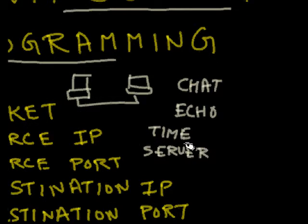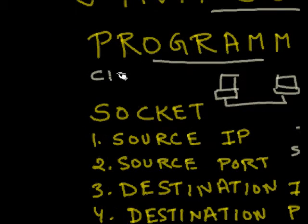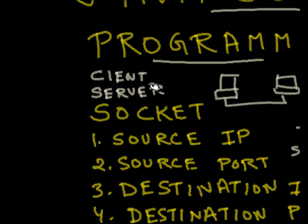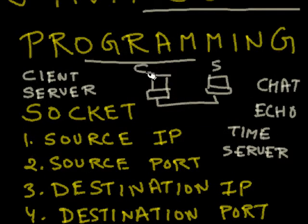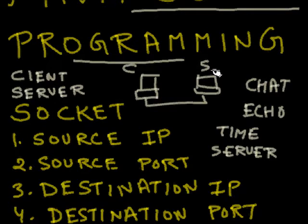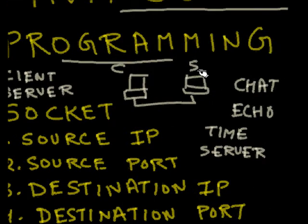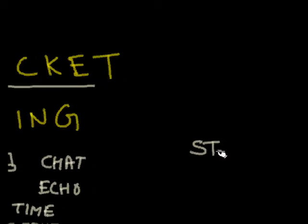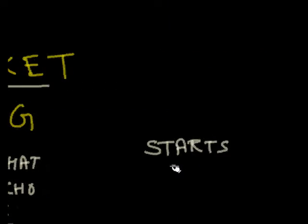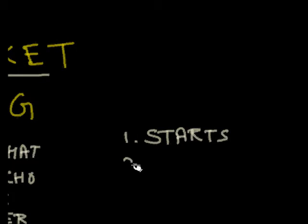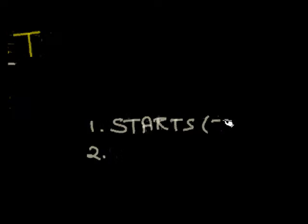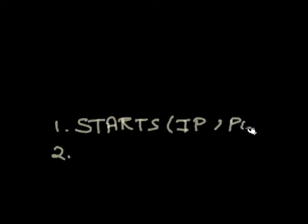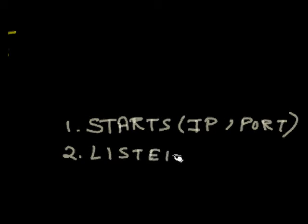Basically, you have a client and a server. The server is running its server socket and it is in listening mode. The server starts — that is the first step — and it starts on one IP address and port number, then it starts listening for connections.